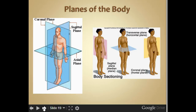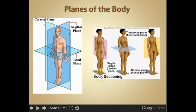Here we have different planes of the body. We have the sagittal plane, which is the median plane. We have the axial plane, the transverse plane, which is horizontal, and the coronal plane, which is the frontal plane.